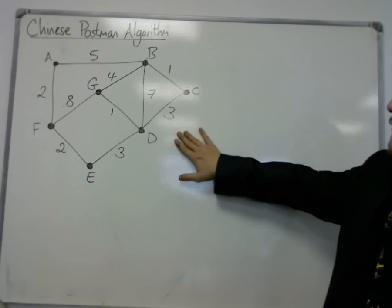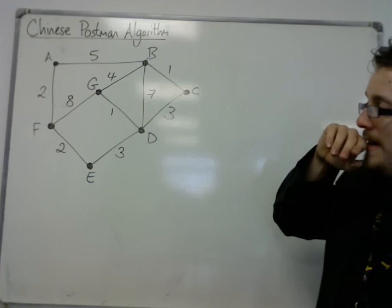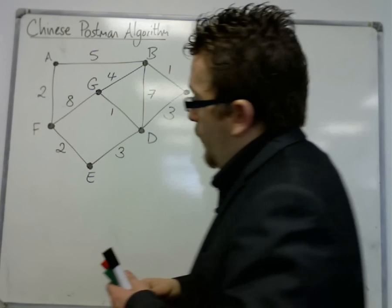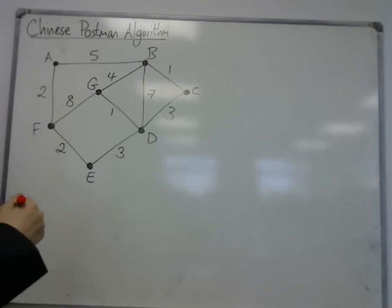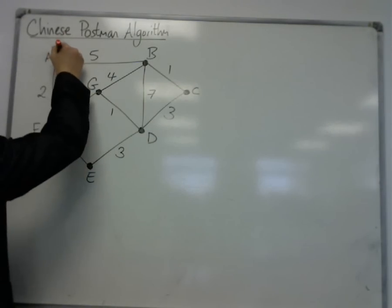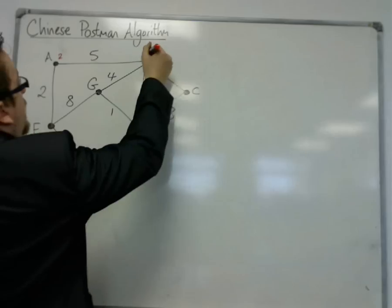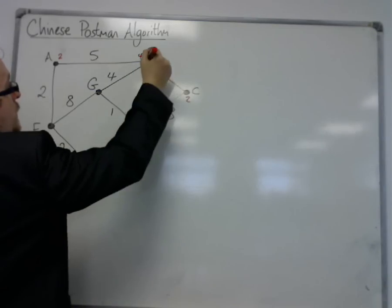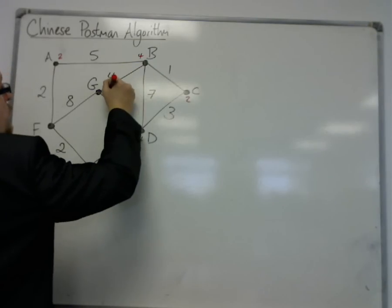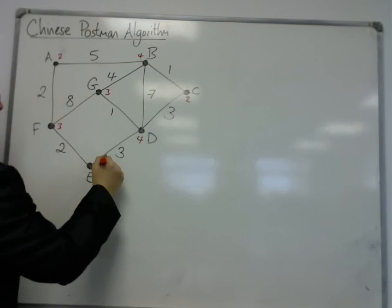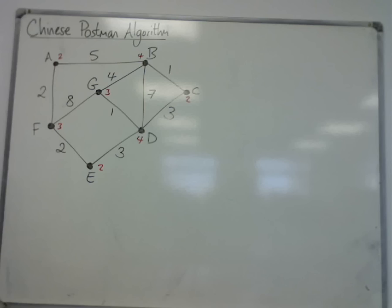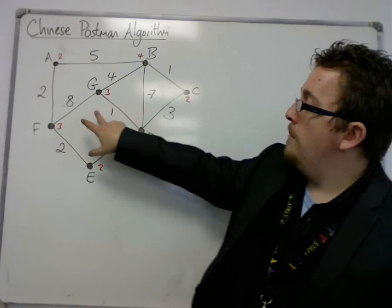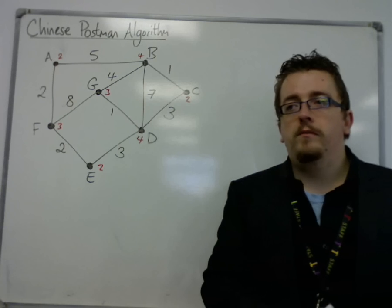An Eulerian graph is a specific one where all of the vertices have even order. Now, if we look at this graph and put numbers next to each of the vertices: that has two edges coming out of it, this has four, this is two, that's four, that's three, that's three, and that's two. In actual fact, they don't all have even order - two of them have odd order.